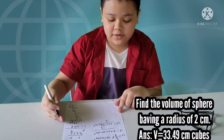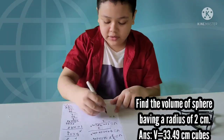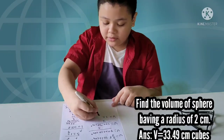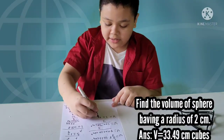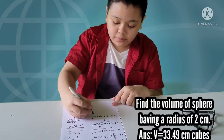And since it's a repeating decimal, you end up with 33.49 cm³.